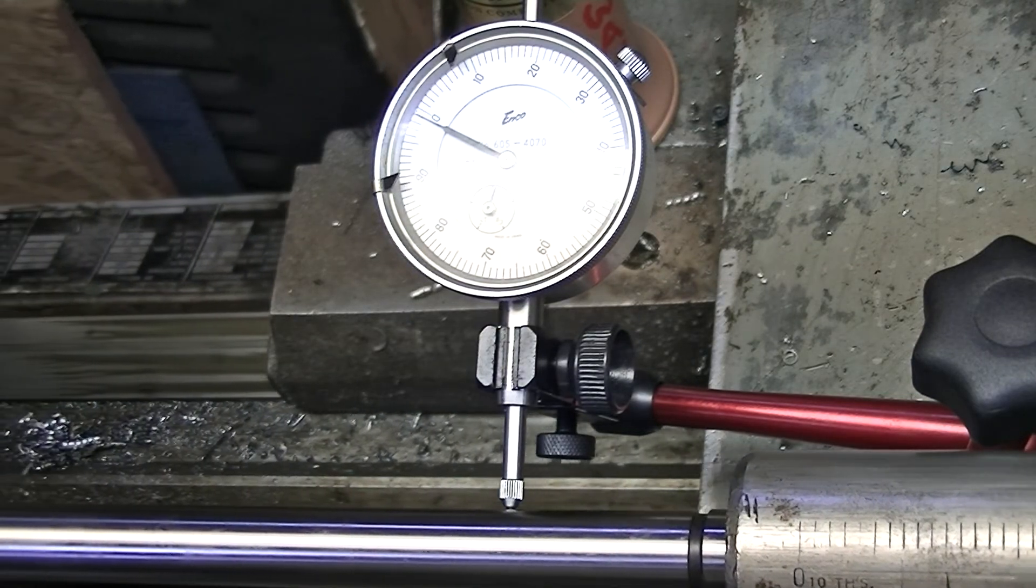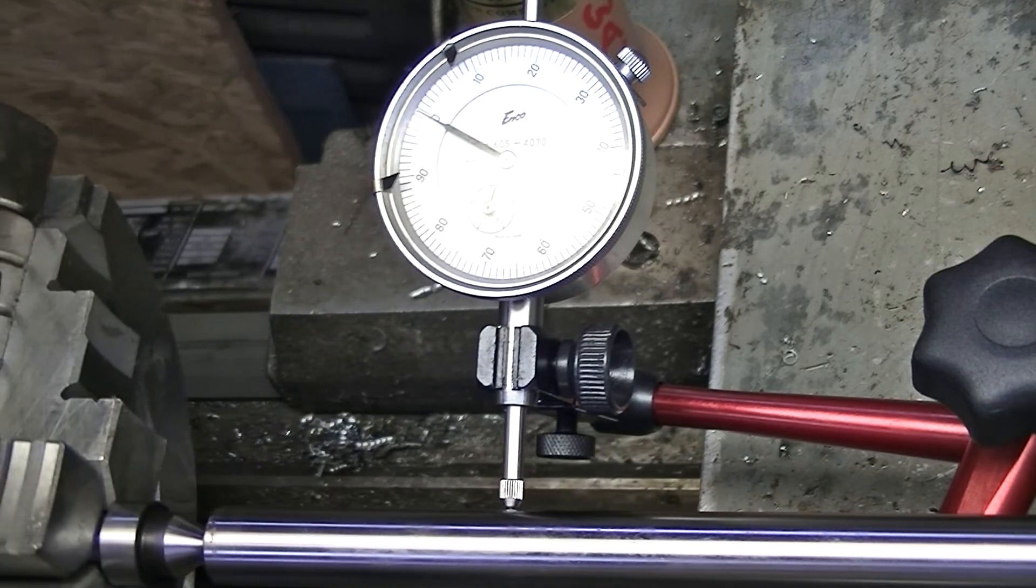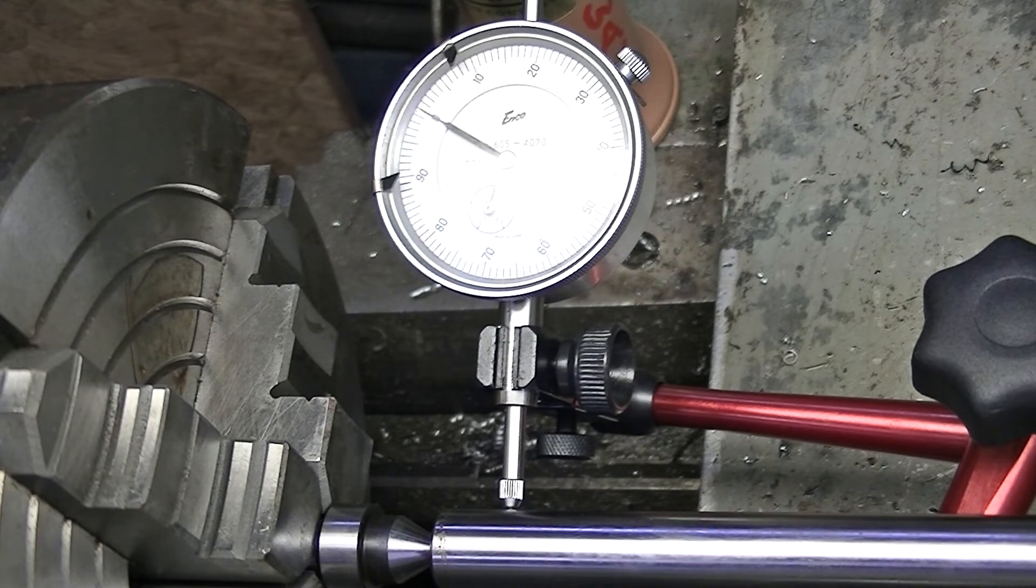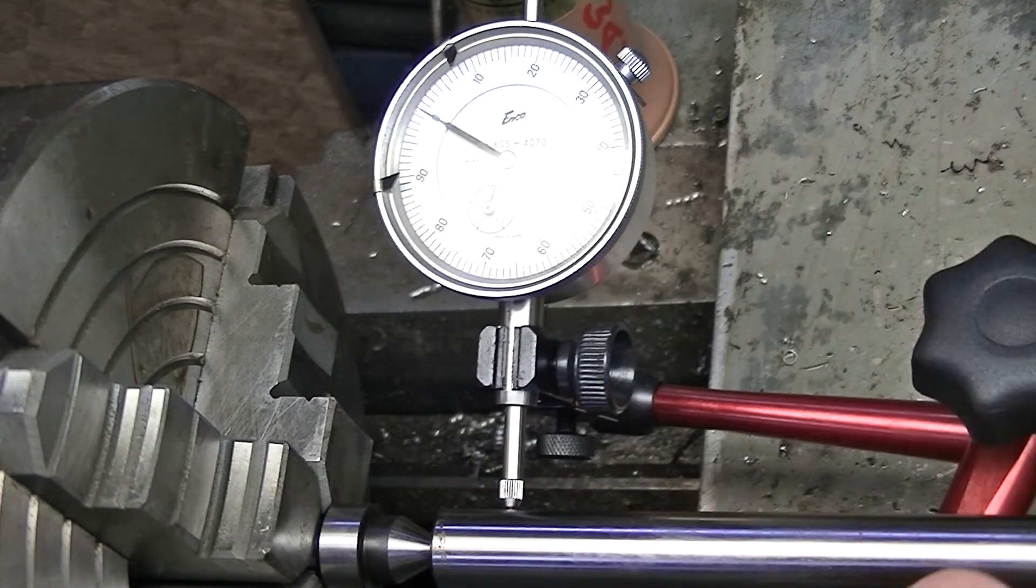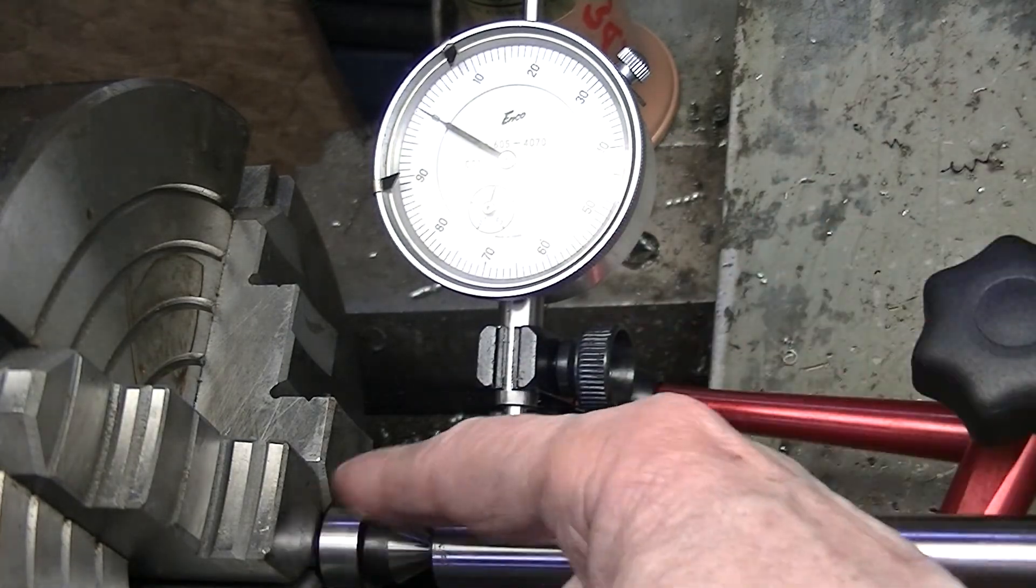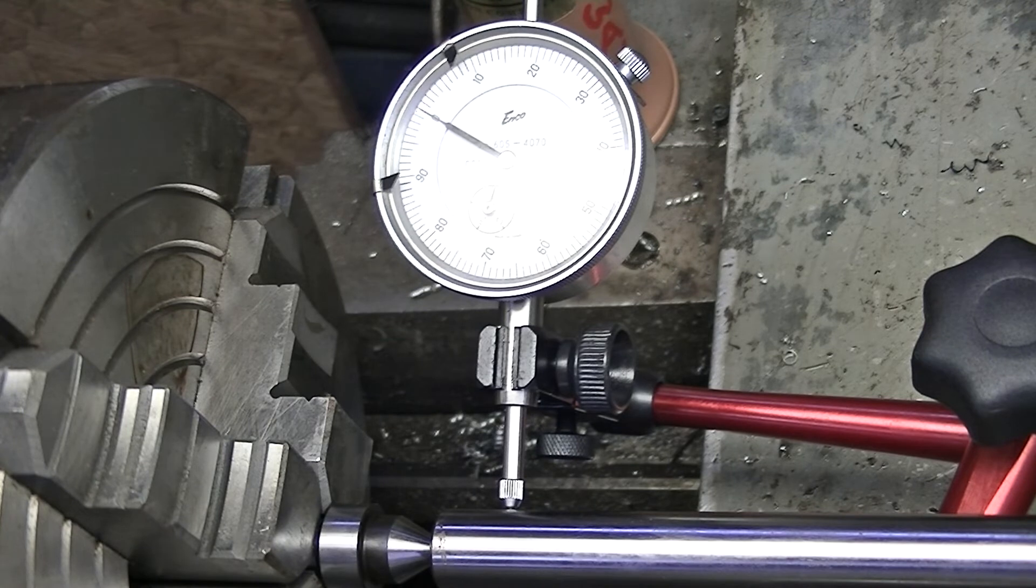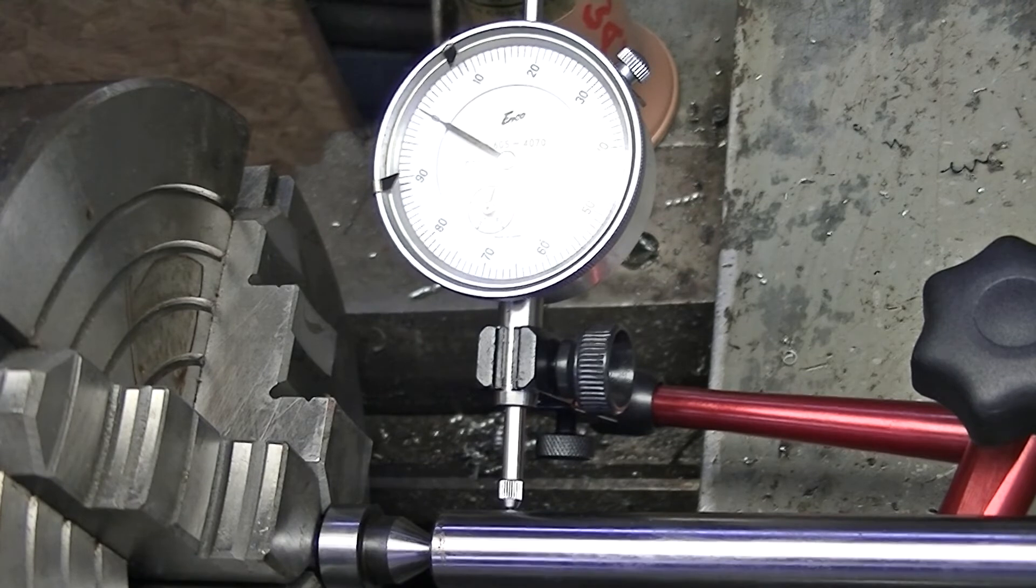Now, there's nothing I can do about it, but I'm going to place the indicator on top of the bar. In other words, this measures horizontal offset left and right of the center, which is what matters when we're cutting. A little bit of deviation up and down doesn't hurt too much. If you do the math, if your cutting tool is on the center line, a few thousandths up and down doesn't matter.